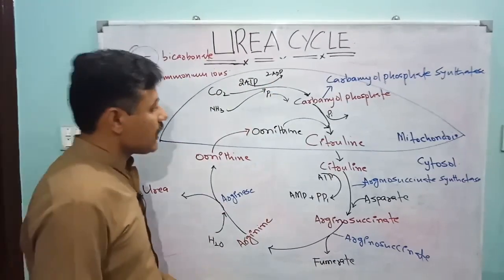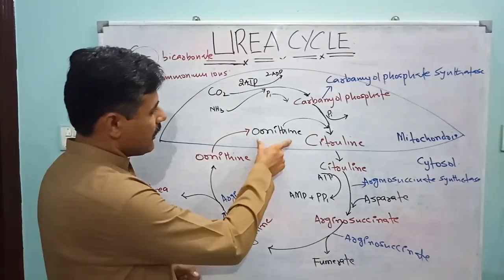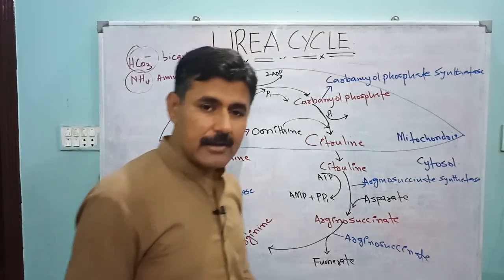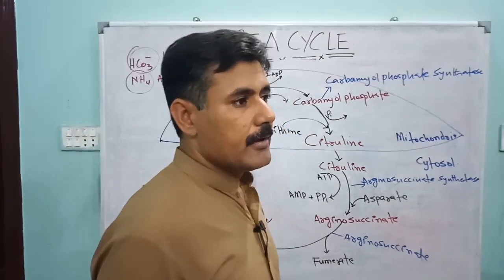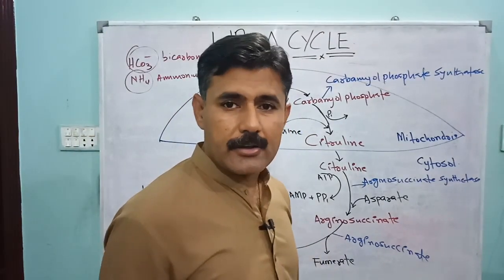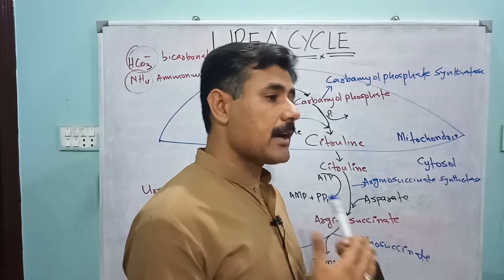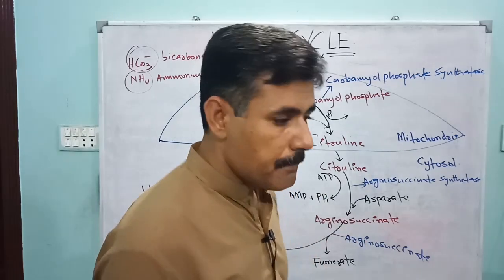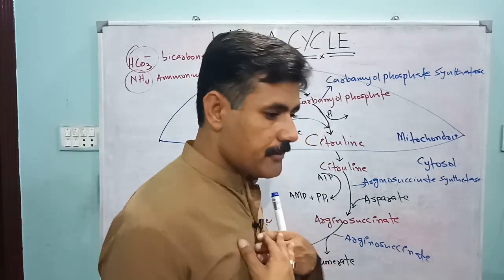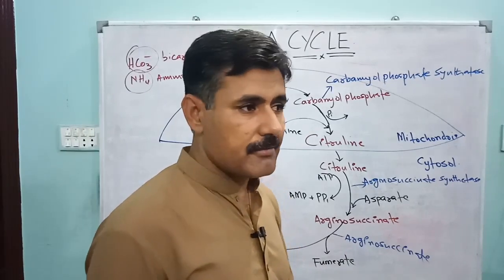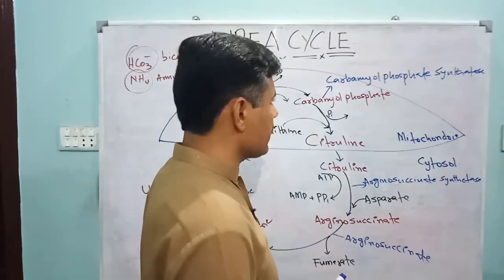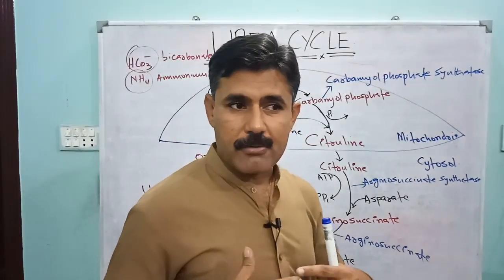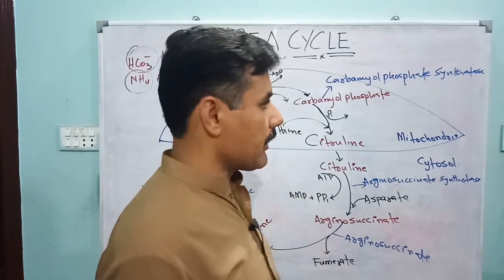The urea cycle, also called the ornithine cycle. Organisms living in a hypertonic, terrestrial, or marine environment cannot afford to excrete nitrogenous waste in the form of ammonia. They excrete nitrogenous waste in the form of urea or uric acid.